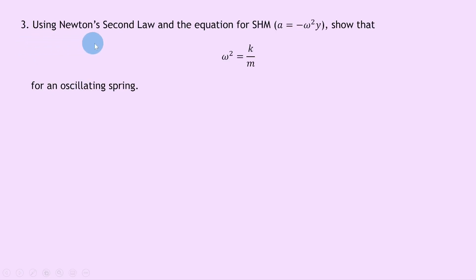Lastly, question 3 says using Newton's second law and the equation for SHM, which is a equals minus omega squared y, show that omega squared is equal to k over m for an oscillating spring. Well, remember Newton's second law first of all, that is F equals ma, and for an oscillating spring we can use Hooke's law, which says F equals minus ky.